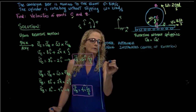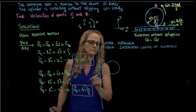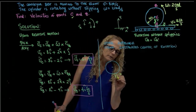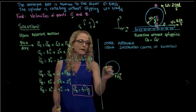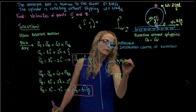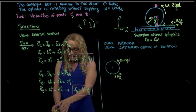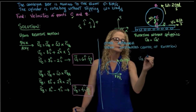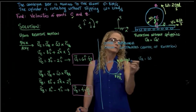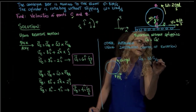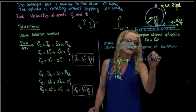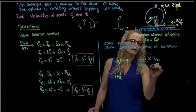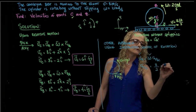Drawing the cylinder, we know that the velocity of A is 8 feet per second and we are rotating at 2 radians per second. Using the concept of instantaneous center of rotation, the velocity of A equals angular velocity times the distance from A to the instantaneous center of rotation. Solving for that distance gives 8 divided by 2, which is 4 feet.